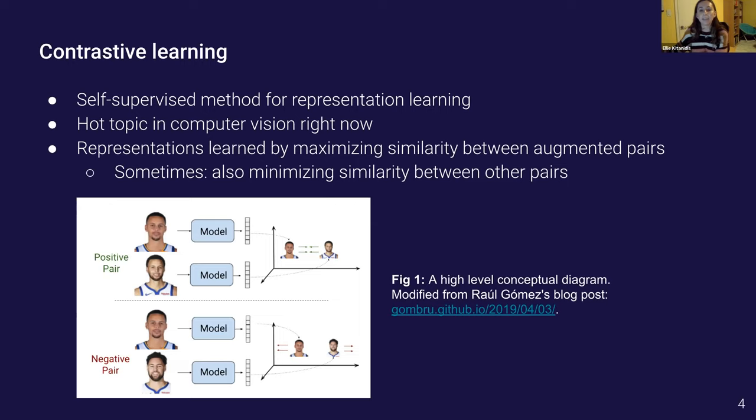It shows that two representations of the same fundamental concept like two images of the same person should be mapped close together while two distinct concepts like two different people should be mapped farther apart. In practice what usually happens is that an input image x is augmented to create two different versions x1 and x2. This augmentation is usually some combination of random cropping, reorientations and other types of noise injection and then the two versions x1 and x2 form a positive pair where the loss function should seek to maximize the similarity between x1 and x2.